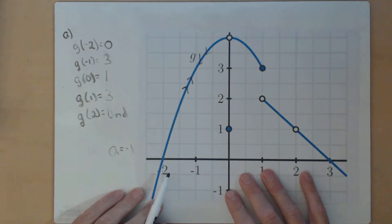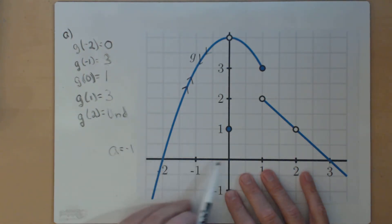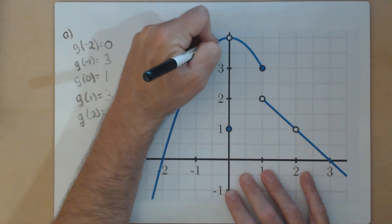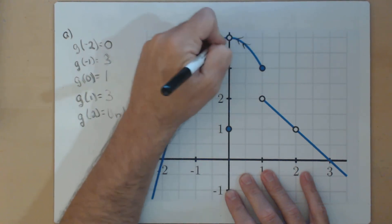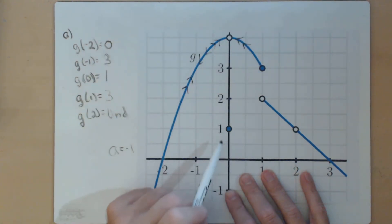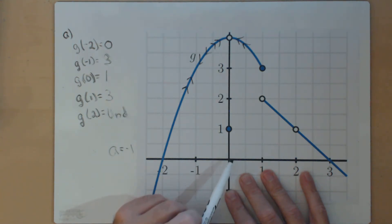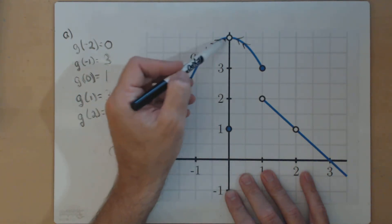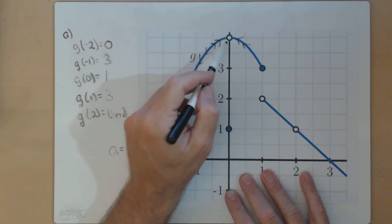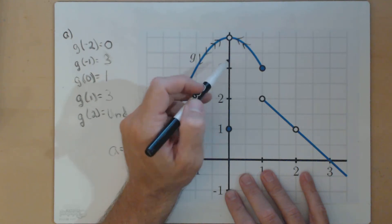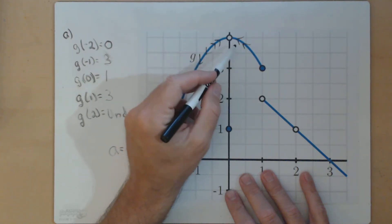We'll talk more about limits in later activities. Similarly, as we head towards 0 from the left, we head towards 4, and as we head towards 0 from the right, we head towards 4. So as x gets closer and closer to 0, g of x gets closer and closer to 4. So even though g of 0 does not equal 4, the limit as x approaches 0 of g of x is going to be 4.